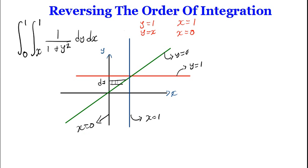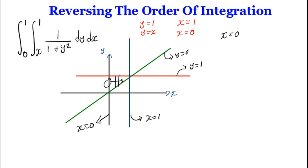To reverse the order, instead of a horizontal strip I'll take a vertical strip. Looking at this area in the x direction, at the left we have x = 0, and as we go right we are limited not by x = 1 but by the function y = x — rewritten as x = y — which becomes the upper limit for x. In the y direction, we start from 0 and go up to y = 1.